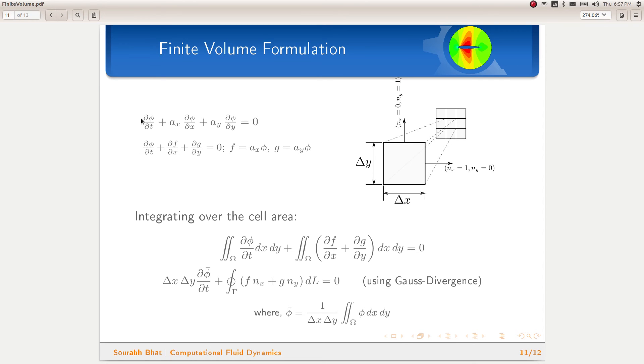So, we have to first convert this partial differential equation to a conservative form which can be easily done by substituting f as Ax phi and g as Ay phi. This moves the constants Ax and Ay inside the derivative. Now, continuing the procedure of finite volume method as we did earlier, we have a simplified equation where delta x times delta y is the area of this rectangular cell. And since we do not have a source term, the right hand side is zero.